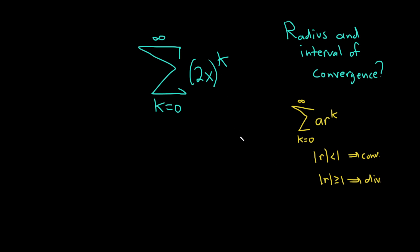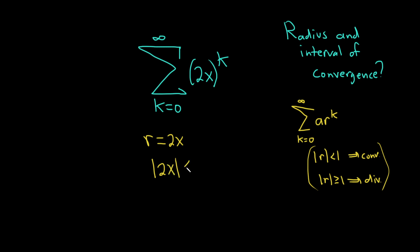Here we can easily identify a is 1, so it's not really relevant. What really matters is the r. You can see r here is equal to 2x. So we know that this series will converge if the absolute value of 2x is less than 1 — that's by the geometric series test.